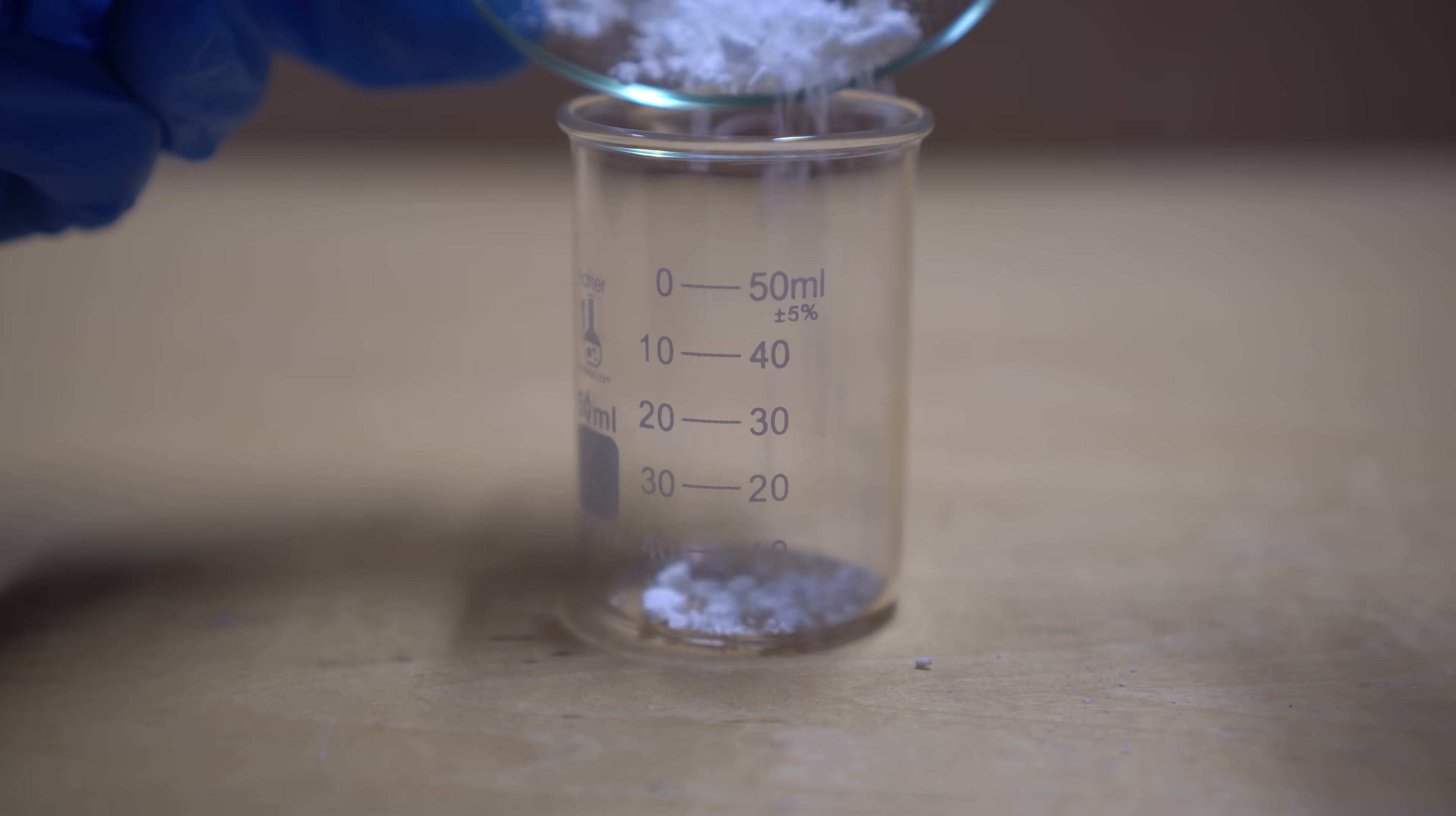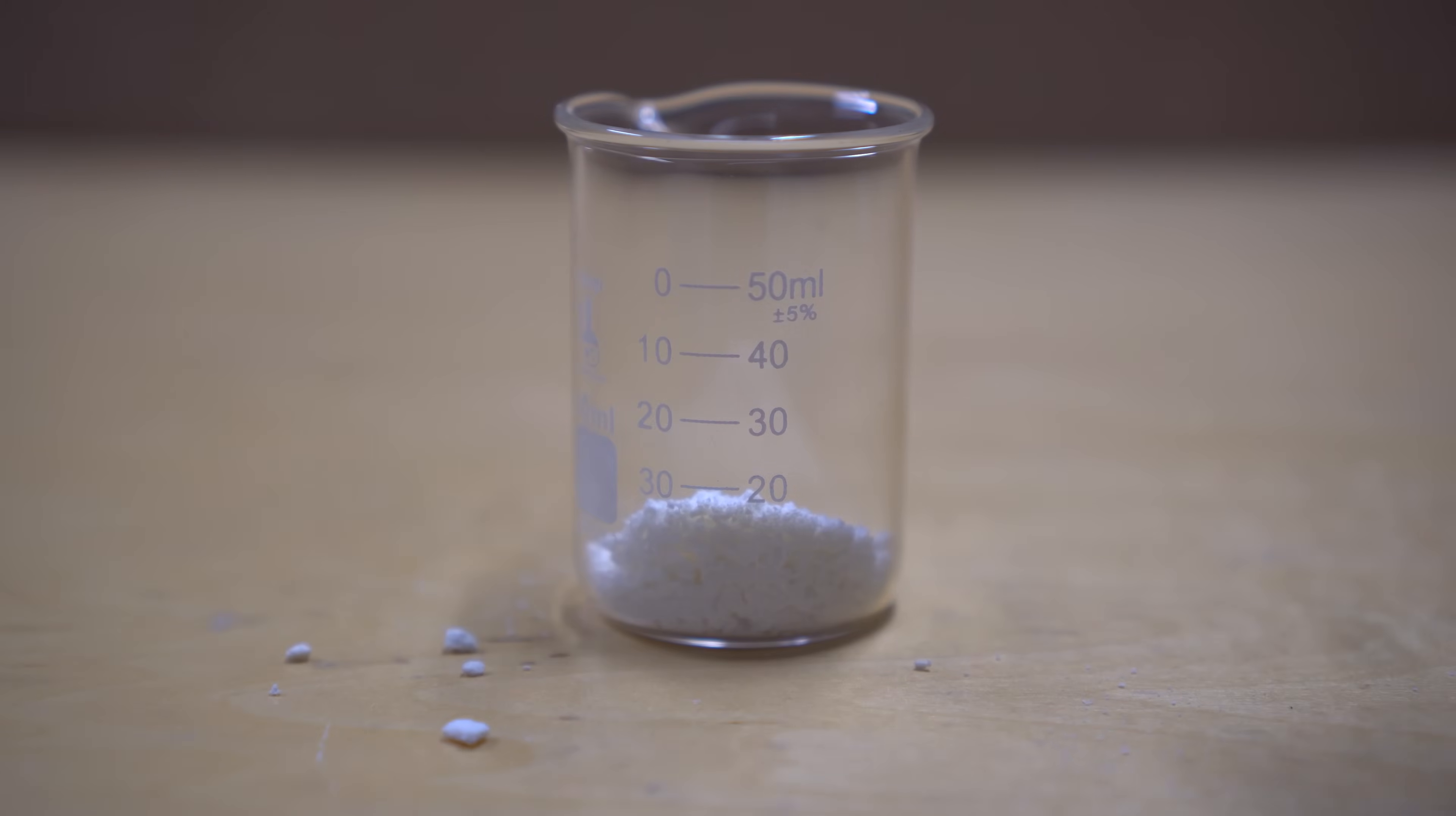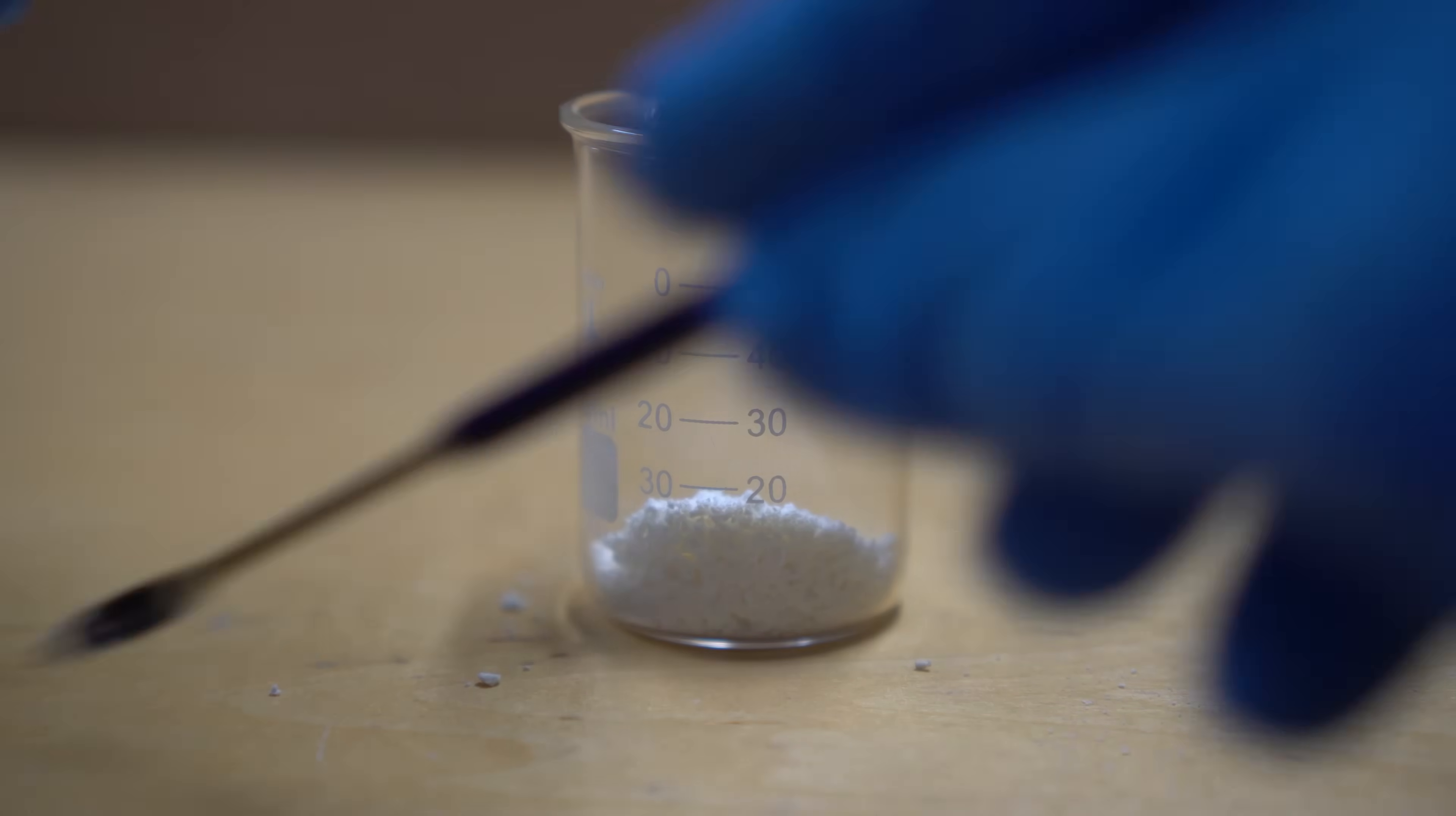I then added the crude aspirin that we made in the previous steps into a new 50 milliliter beaker. The next step in this was to add the sodium bicarbonate solution to the crude aspirin. The aspirin will dissolve a lot easier in a more alkaline solution, which is also another reason why we're adding the sodium bicarbonate.